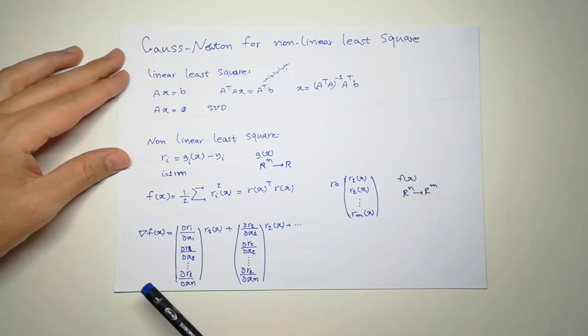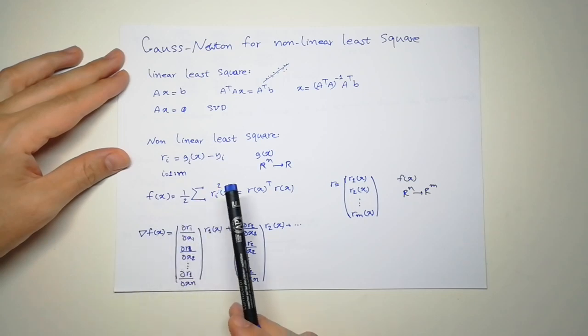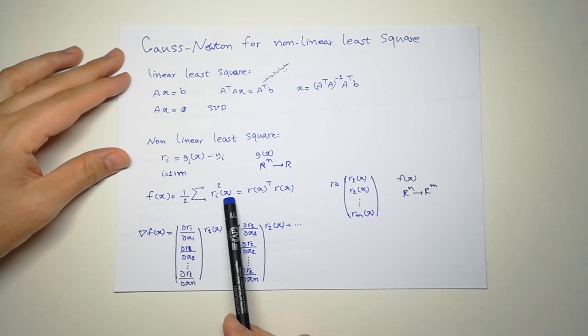Let's see how we can calculate the gradient of F. We use the chain rule because R is not a direct function of X.